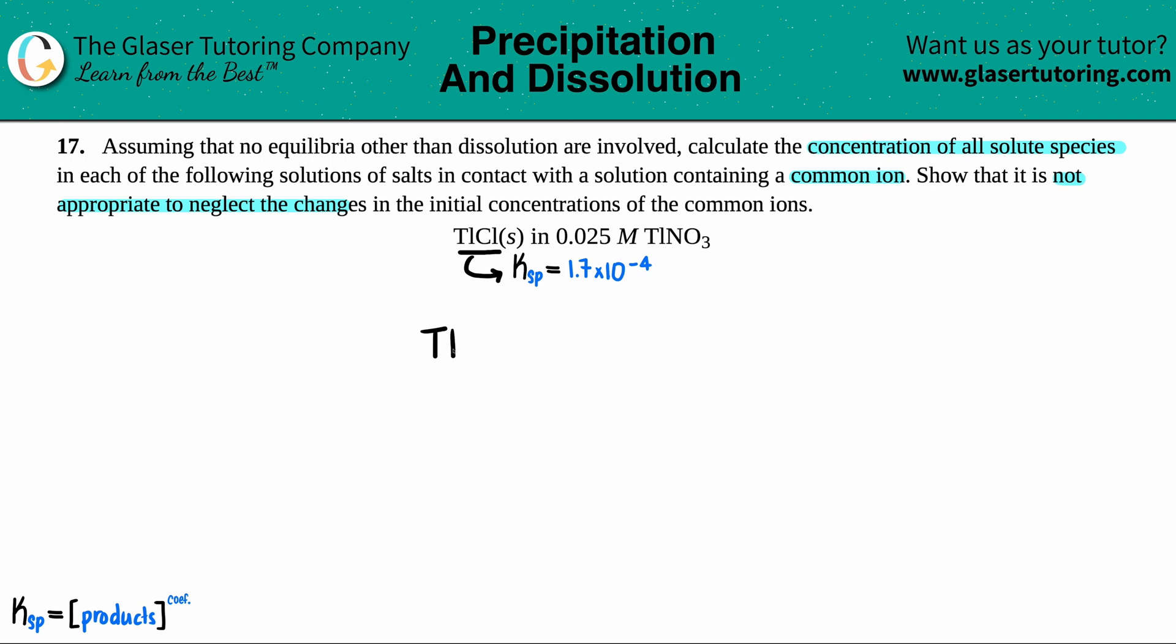We have TlCl as a solid. We're dealing with K values so we're talking about equilibrium, double arrows between the two ions, right? So that has to be between the Tl and the Cl.